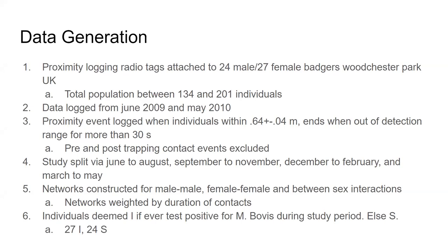A contact was binary, considered to happen when two tagged badgers came within 0.64 ± 0.4 meters of each other, and would end when they were out of detection for more than 30 seconds. They had to trap the badgers to test them for M. bovis and excluded contact events pre and post these trappings, assuming behavior would differ. Networks were constructed for male-to-male contacts, female-to-female contacts, and between-sex interactions.